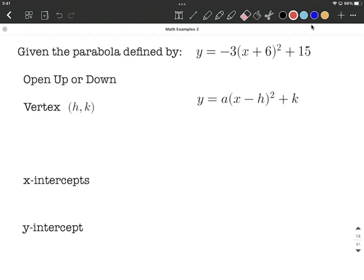And let's figure out the vertex, x-intercepts, y-intercept, and whether it opens up or down. So the first thing to notice is a is going to be negative 3, as you just kind of line things up with the formula. So a is negative, that tells us that this parabola opens down.